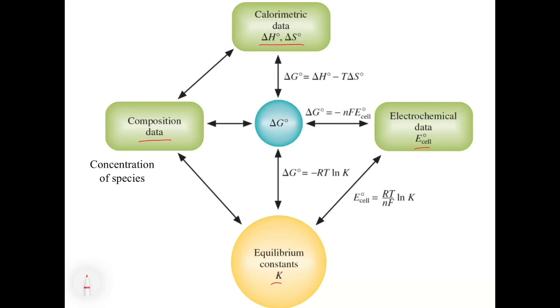These are what we call the observables on the outside. So those four things I talked about, those are the things that you can observe by experiment. And what links them all is delta G. So delta G is the link between all of these observables.